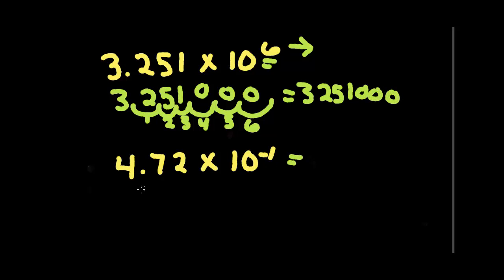And this next one, if we rewrite this, you can see it's a negative number. So we need to move to the left. And we need to just go one place. So I'm going to go one place. And that stops us right there in front of the 4. So we end up with 0.472. We didn't need any placeholders in that one.